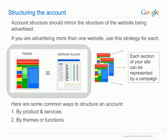By themes or functions: a company that provides only one or a few products or services can set up separate campaigns and ad groups to promote the same product to a variety of needs. For example, a catering company may want to run separate campaigns or ad groups for weddings, corporate events and birthdays. This way, the keywords and ad text can be highly specific and directly relevant to what a potential customer will be looking for.